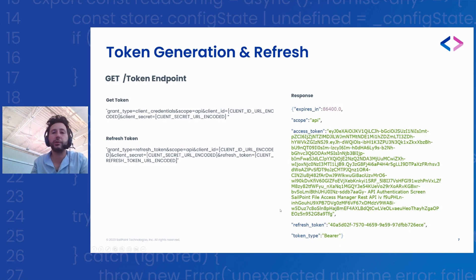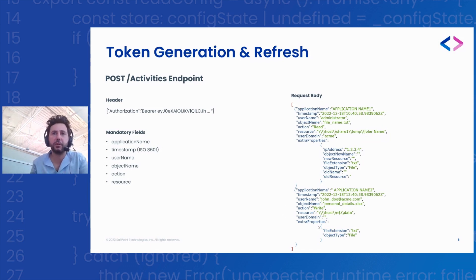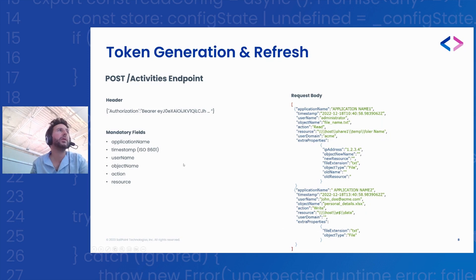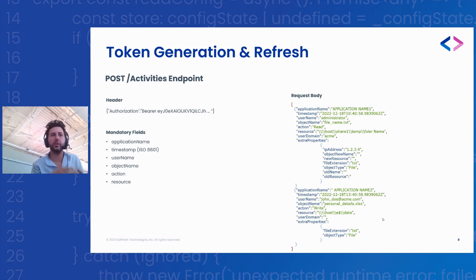The refresh token endpoint allows you to refresh the token, and the activities endpoint is the only other endpoint in this REST API. It ingests the activity data you send in JSON format. The JSON can contain one or more activities depending on your implementation. There are mandatory fields in that structure: the application name — which is how we correlate that data with information already stored in File Access Manager — and the timestamp, which must be in ISO 8601 format. The username helps correlate that user to an identity.